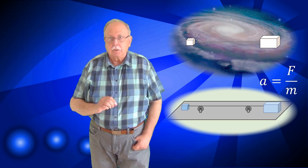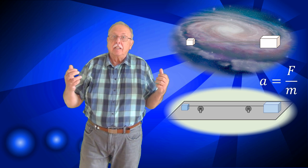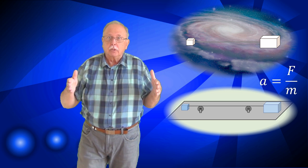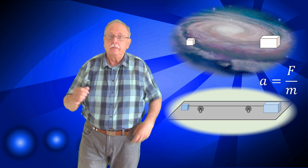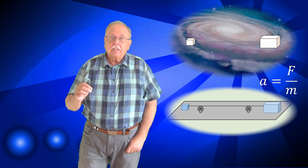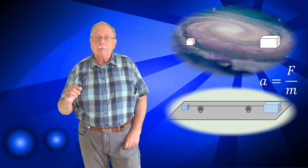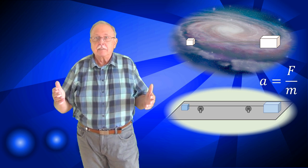Dar mai avem cazul în care firul are o oarecare rigiditate. Nu se îndoaie și nu lasă corpurile să se apropie unul de altul la o distanță mai mică decât lungimea lui, a firului. Deci, în acest caz, distanța dintre corpuri este în fiecare moment egală cu lungimea firului. În acest caz, corpurile se mișcă pe distanțe diferite, deoarece centrul de masă al sistemului trebuie să rămână în același loc.